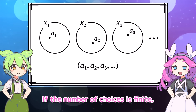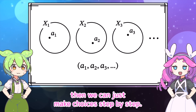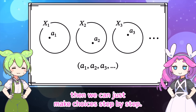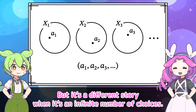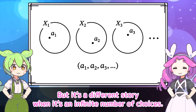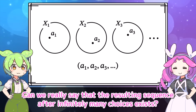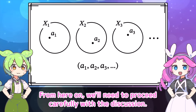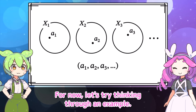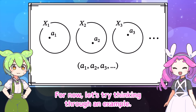If the number of choices is finite, then we can just make choices step by step. But it's a different story when it's an infinite number of choices. Can we really say that the resulting sequence after infinitely many choices exists? From here on, we'll need to proceed carefully. For now, let's try thinking through an example.